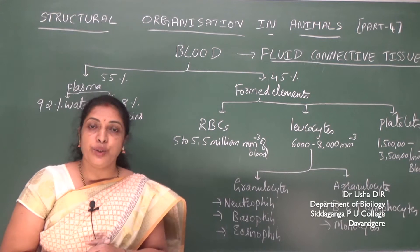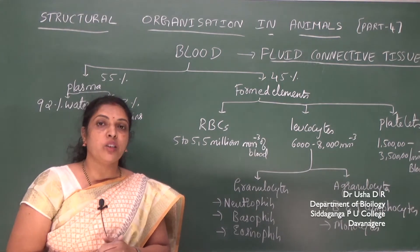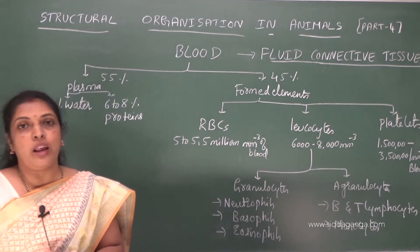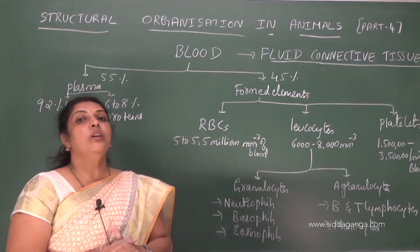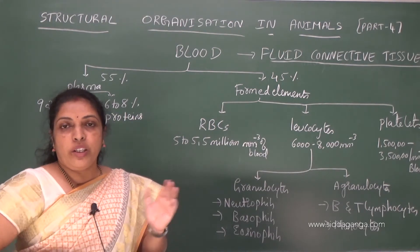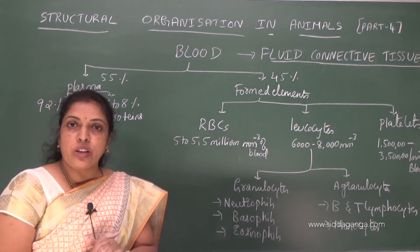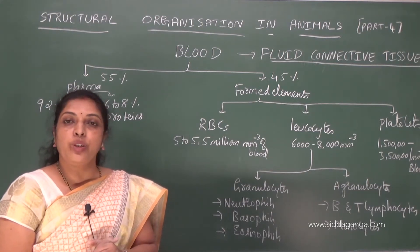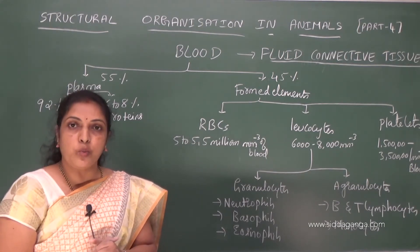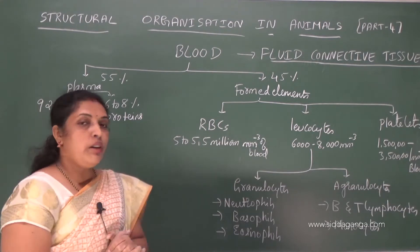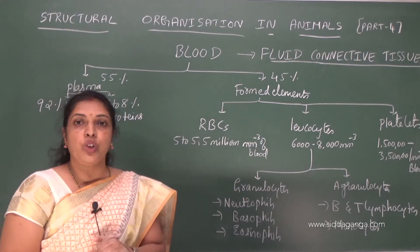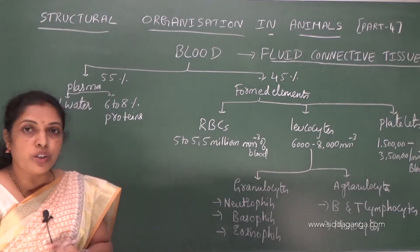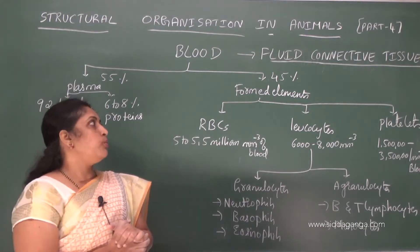Hello children, let us continue with the topic structural organization in animals. In our last class we discussed about connective tissue — loose connective tissue, dense connective tissue, and specialized connective tissue including bone and cartilage. Today we'll discuss one more connective tissue, that is blood, after which we'll discuss muscular tissue and nervous tissue.